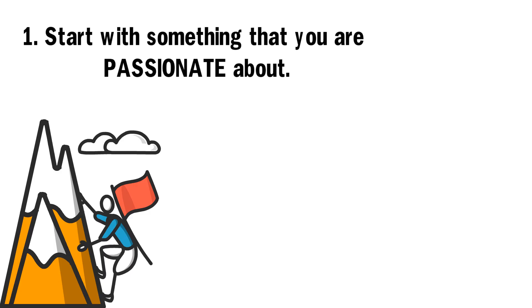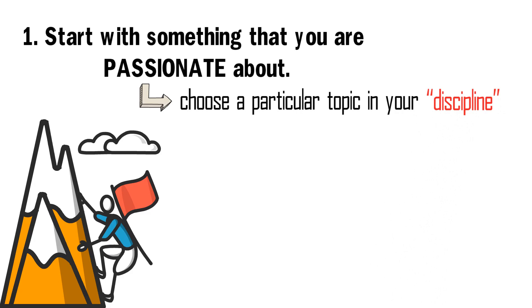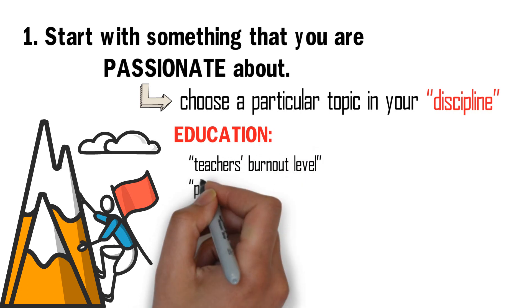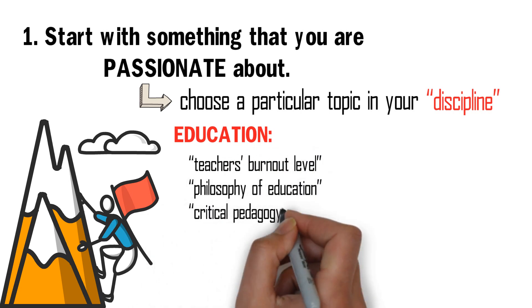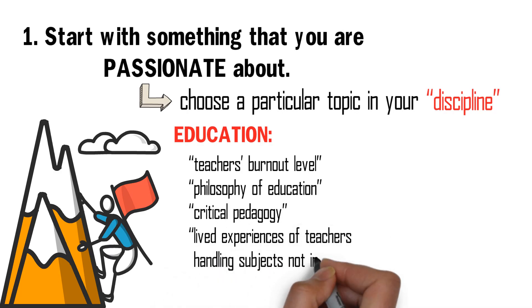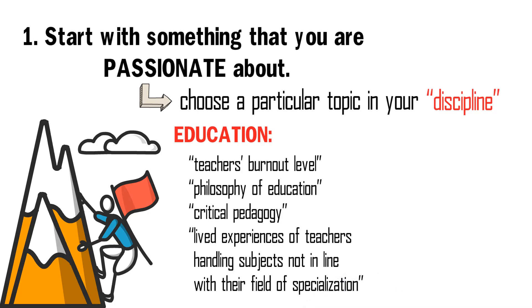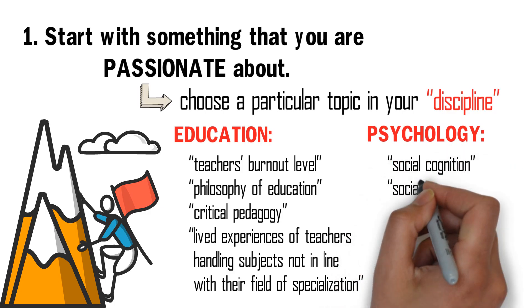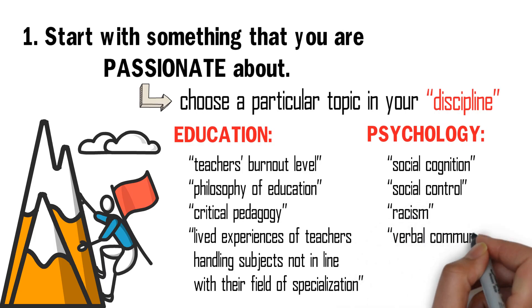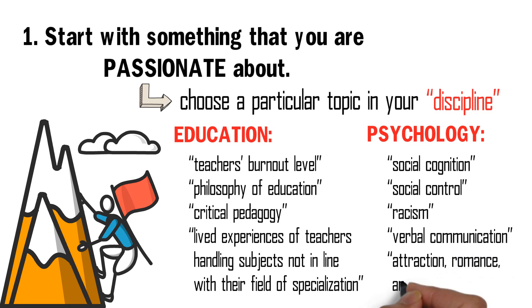Starting with something we are passionate about in relation to identifying a research gap involves choosing a particular topic in your discipline or area of specialization. For instance, if one's discipline is education, then she might be passionate about doing research on teacher's burnout level, philosophy of education, critical pedagogy, or lived experiences of teachers handling subjects not in line with their field of specialization. And if the researcher's discipline is psychology, she might be passionate about doing research on social cognition, social control, racism, verbal communication, or even attraction, romance, and love.